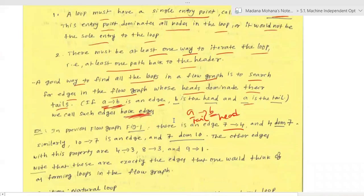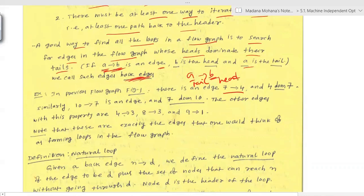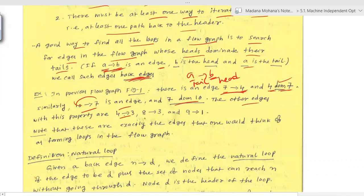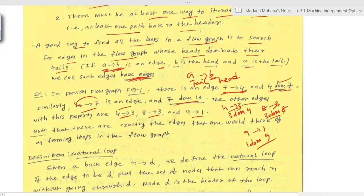For a back edge the domination is written in reverse order: head dominates tail. So for edge 7→4, we write 4 dom 7. Similarly, edge 10→7 means 7 dominates 10. Other back edges with this property are: 4→3 (3 dominates 4), 8→3 (3 dominates 8), and 9→1 (1 dominates 9). The dominator is represented as head-to-tail, whereas the back edge is represented as tail-to-head.